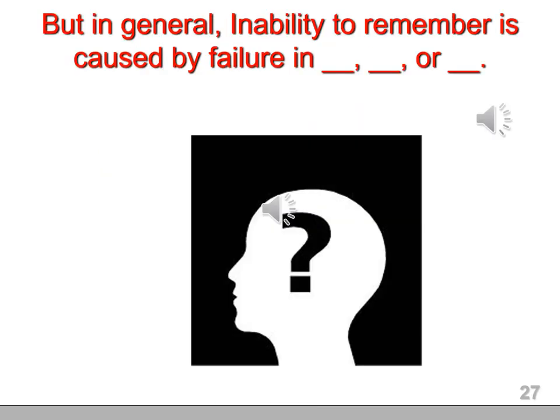It's very unlikely that if you can't remember something, it's due to amnesia. In general, our inability to remember is caused by a failure in either the way we encoded the information, stored it, or retrieved it.